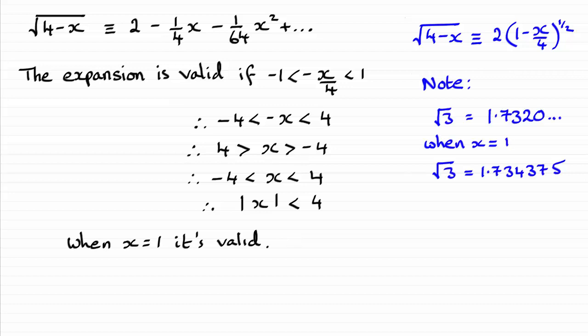And just out of interest, if you were to take the square root of 3 on your calculator you get 1.7320 and so on. But when you put x equals 1 into here, you can see that you end up with a value very close to 1.7320. So you can see it does work.